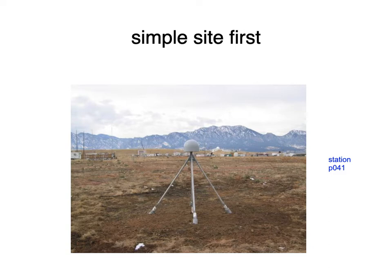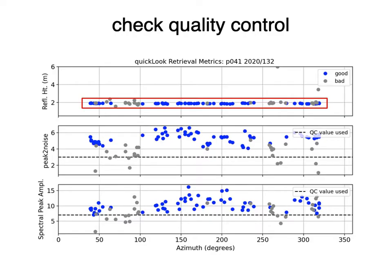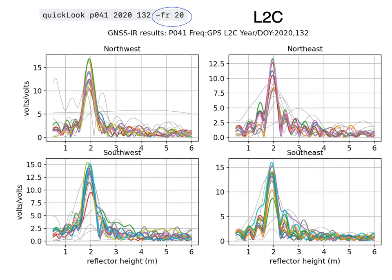Here are two examples. First, a bare soil site in Boulder — not completely flat, but fairly planar especially in winter. These are the default returns: just give it the station name, the year, and the day of year. The antenna is about two meters tall. Successful retrievals in the four different quadrants are colored, while unsuccessful ones are shown as light gray lines. The next plot gives a summary: reflector heights are all bunched around two meters for all azimuths. The peak-to-noise for good retrievals is about 4 to 5, and the peak amplitudes for L1 frequency are about 8 to 12.